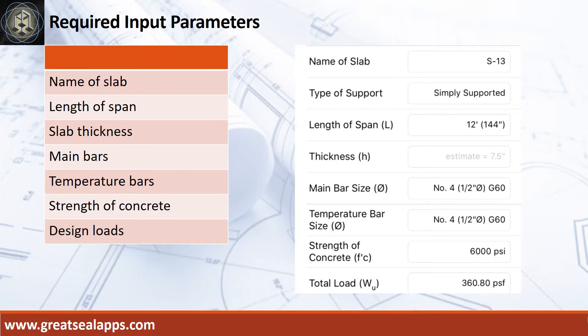Enumerate input parameters required. Name of slab: S13. Type of support: simply supported. Length of span: 12 feet. Slab thickness: 7.5 inches. Main bars and temperature bars: half-inch diameter at grade 60. Strength of concrete: 6,000 psi. Total load: 360.8 PSF.